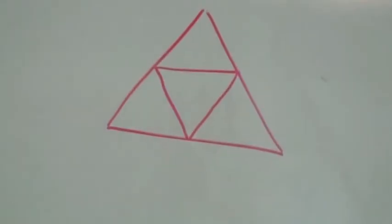Higher order thinking skills is when you think outside the box. Someone would normally see four triangles, but there are actually five.